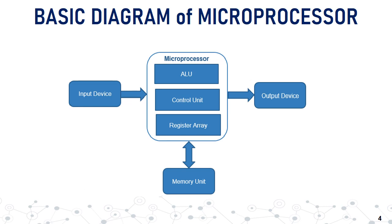Now let's talk about the basic structure of a microprocessor. A microprocessor consists of three main components: ALU (Arithmetic Logic Unit), Control Unit, and registers. From the basic diagram, the microprocessor first gets all inputs from the input devices, then the control unit and ALU decide whether the instruction needs the help of the memory unit or not.